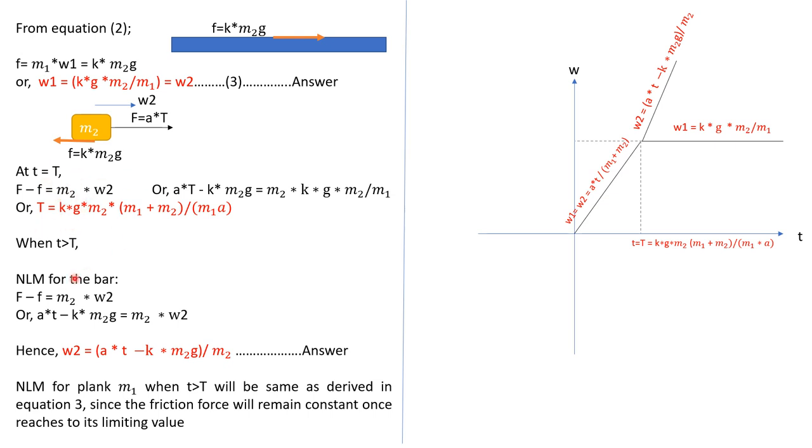Now we will consider the case t greater than T. So one thing is there. Once the time is greater than T, the friction force is not going to rise beyond this because this is the limiting friction, limiting value of it. So this force will remain same. So this will move with the same acceleration throughout after the capital T time. So plank acceleration will be this only, which I have written over here.